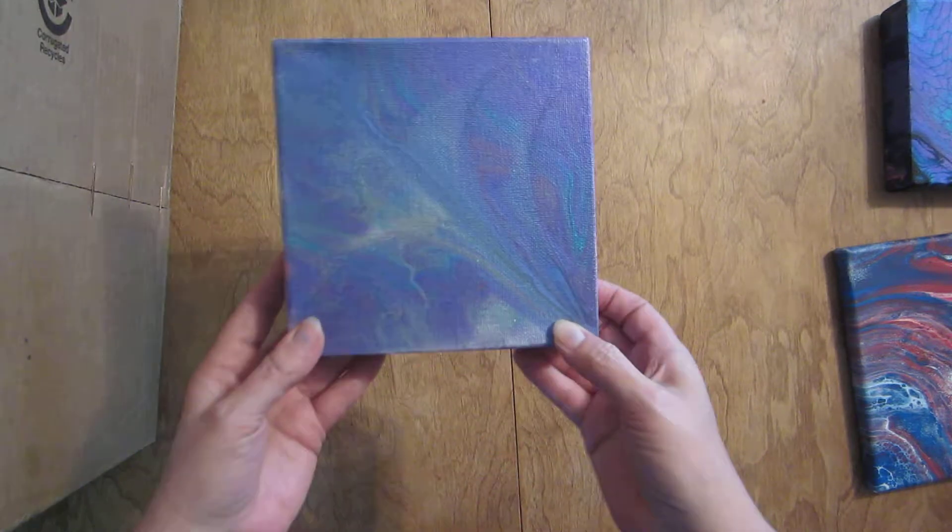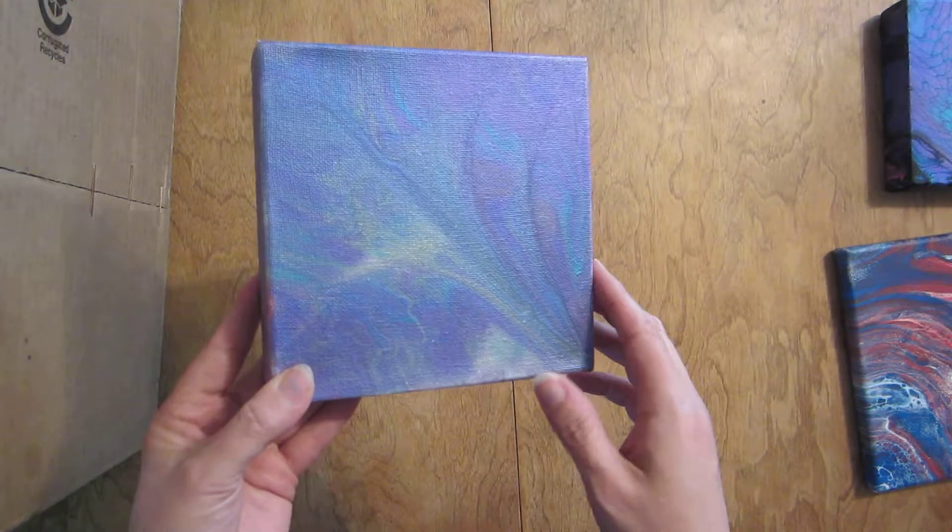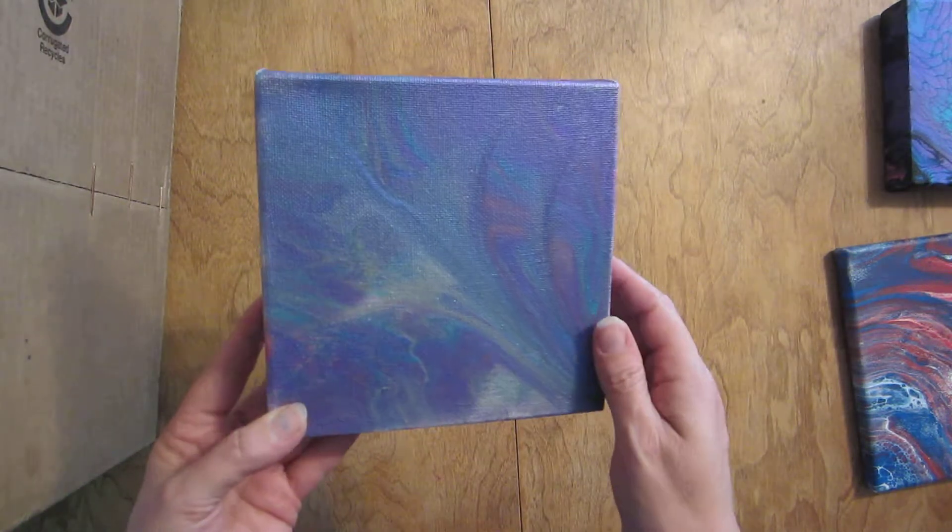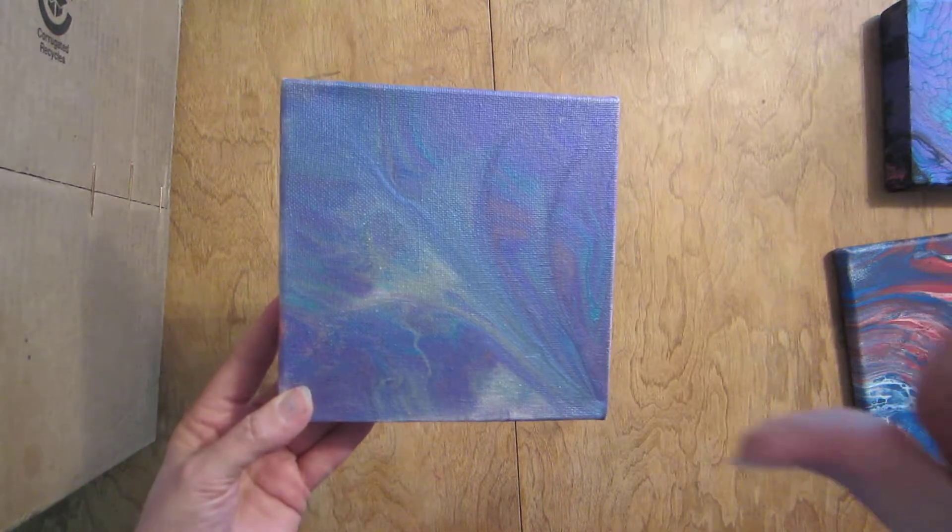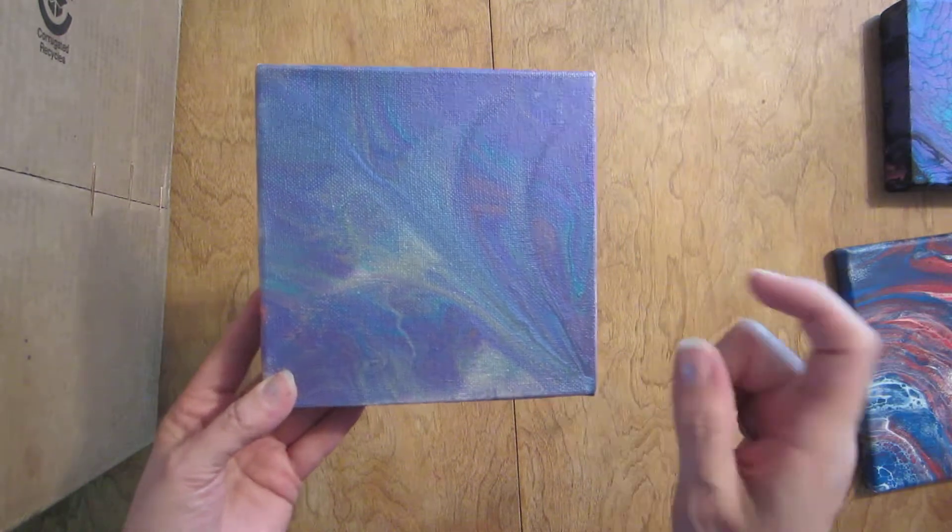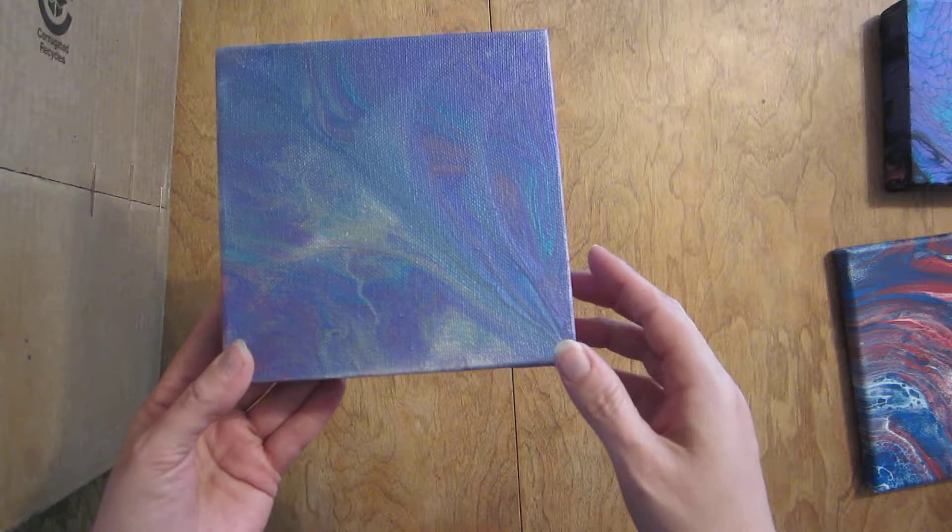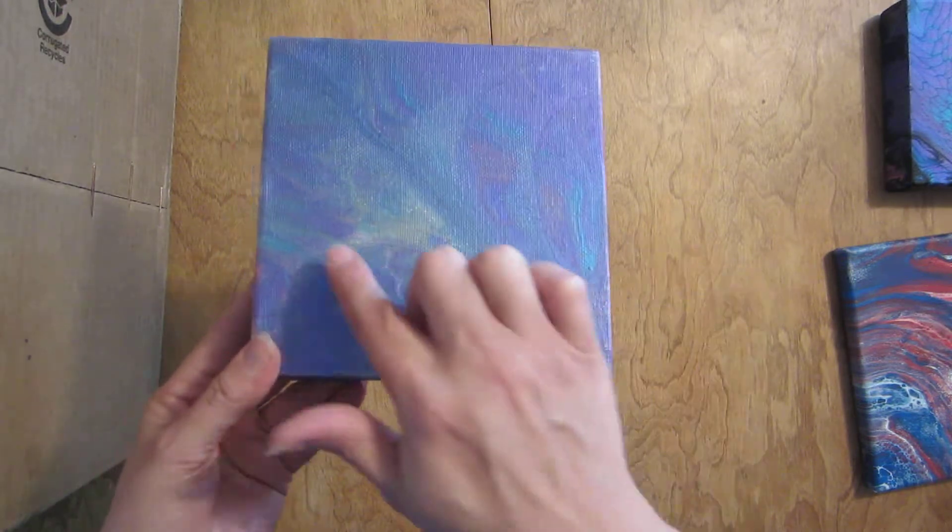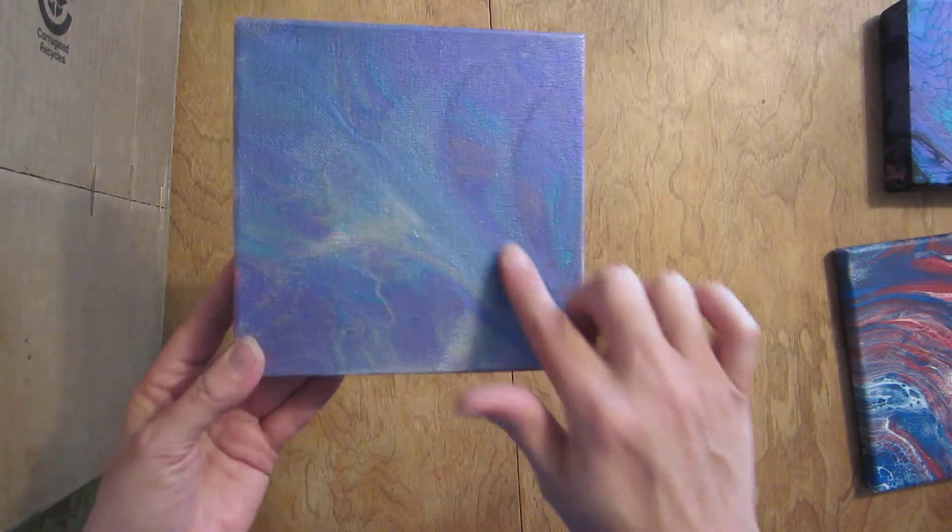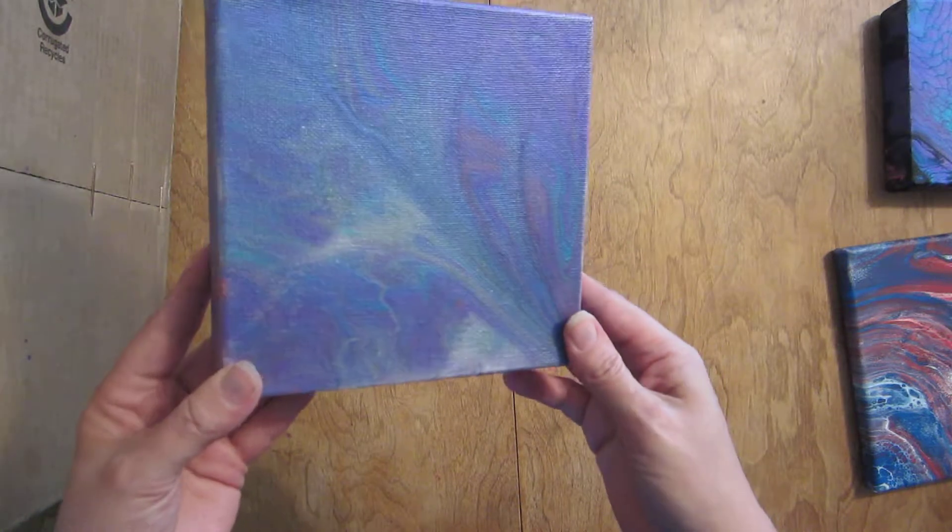And here is my 3-in-1 that I did where I did the dirty pour, and then did the dip thing with the little discs, and then did my chain pull. It didn't come out too bad. It dried pretty nice. There are some lighter spots, definitely where I did the chain. But I kind of like the way it looks.